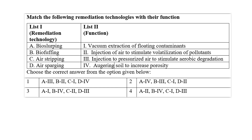Question seventeen: Match the remediation technologies with their functions. Bio-slurping means vacuum extraction of floating contaminants. Bio-puffing means aerating the soil to increase porosity for removal of contaminants. Bio-stripping means injection of air to stimulate volatilization of organic pollutants, especially volatile organic compounds. Air sparging means injection of pressurized air to stimulate aerobic bacteria. So the third option is the right answer.